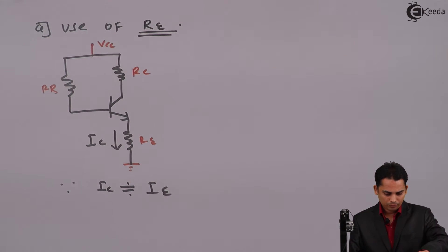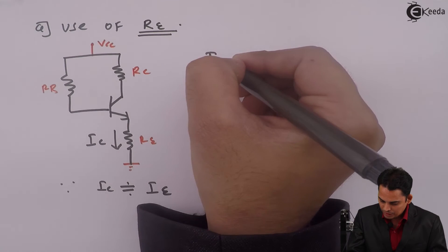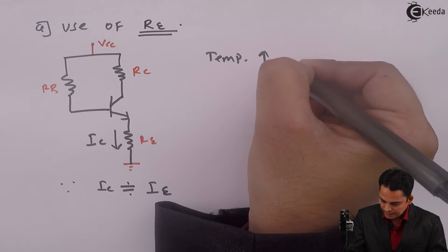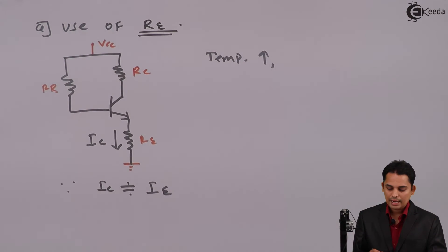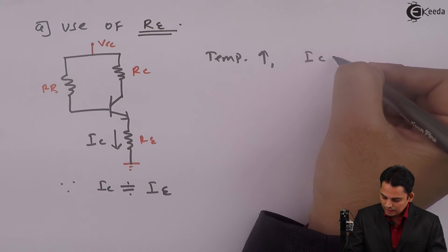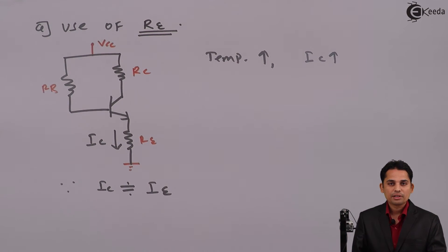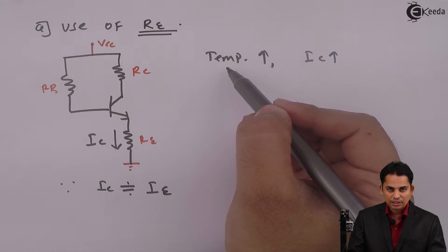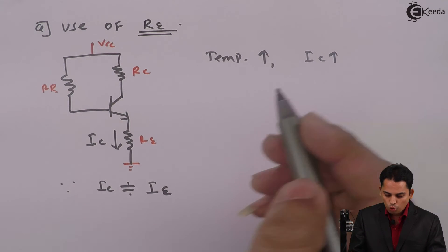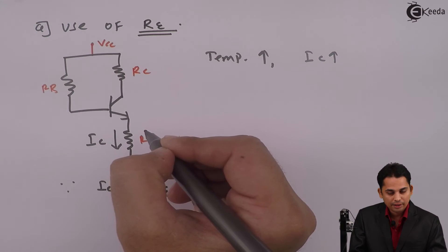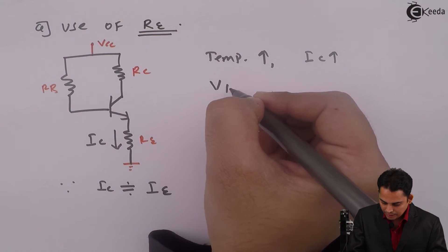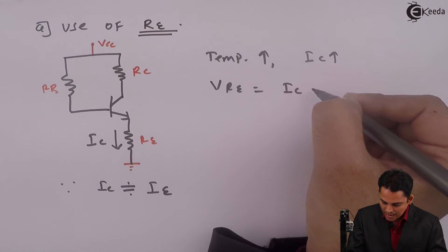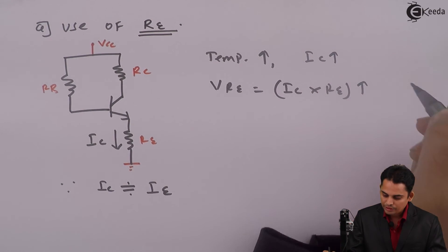Now whenever temperature increases, we know that as temperature increases, IC will increase. Now temperature increases, IC is increasing, voltage drop across RE, that is VRE, given as IC into RE, will increase.